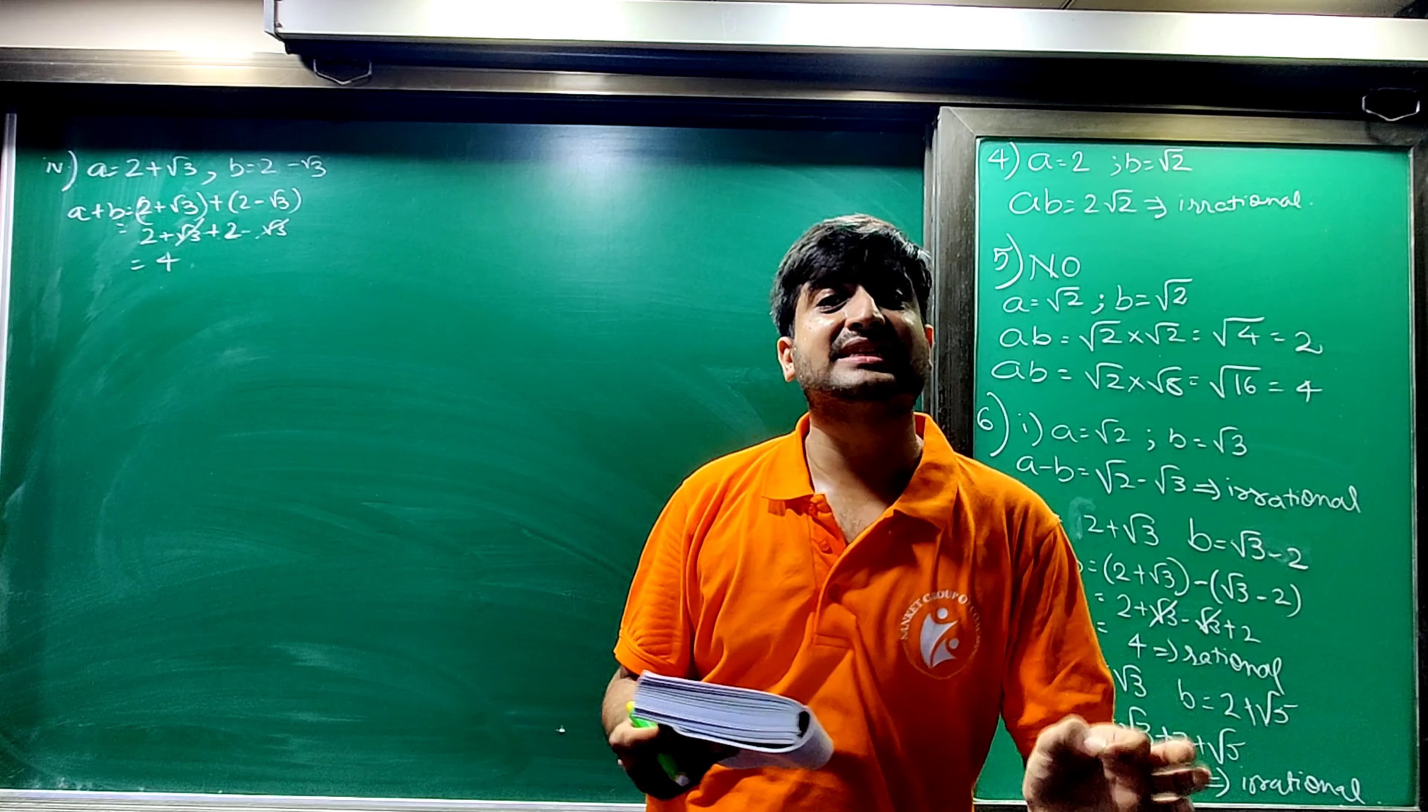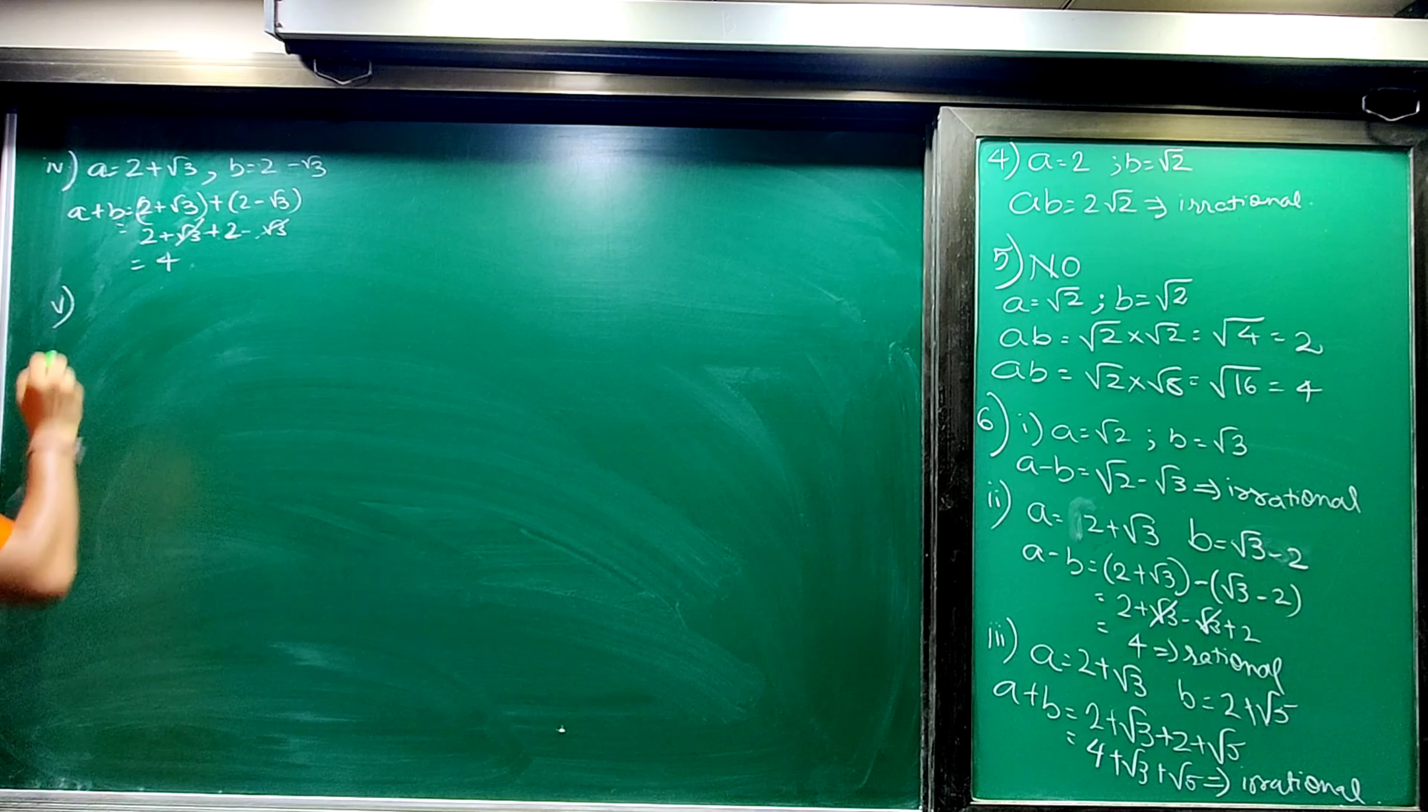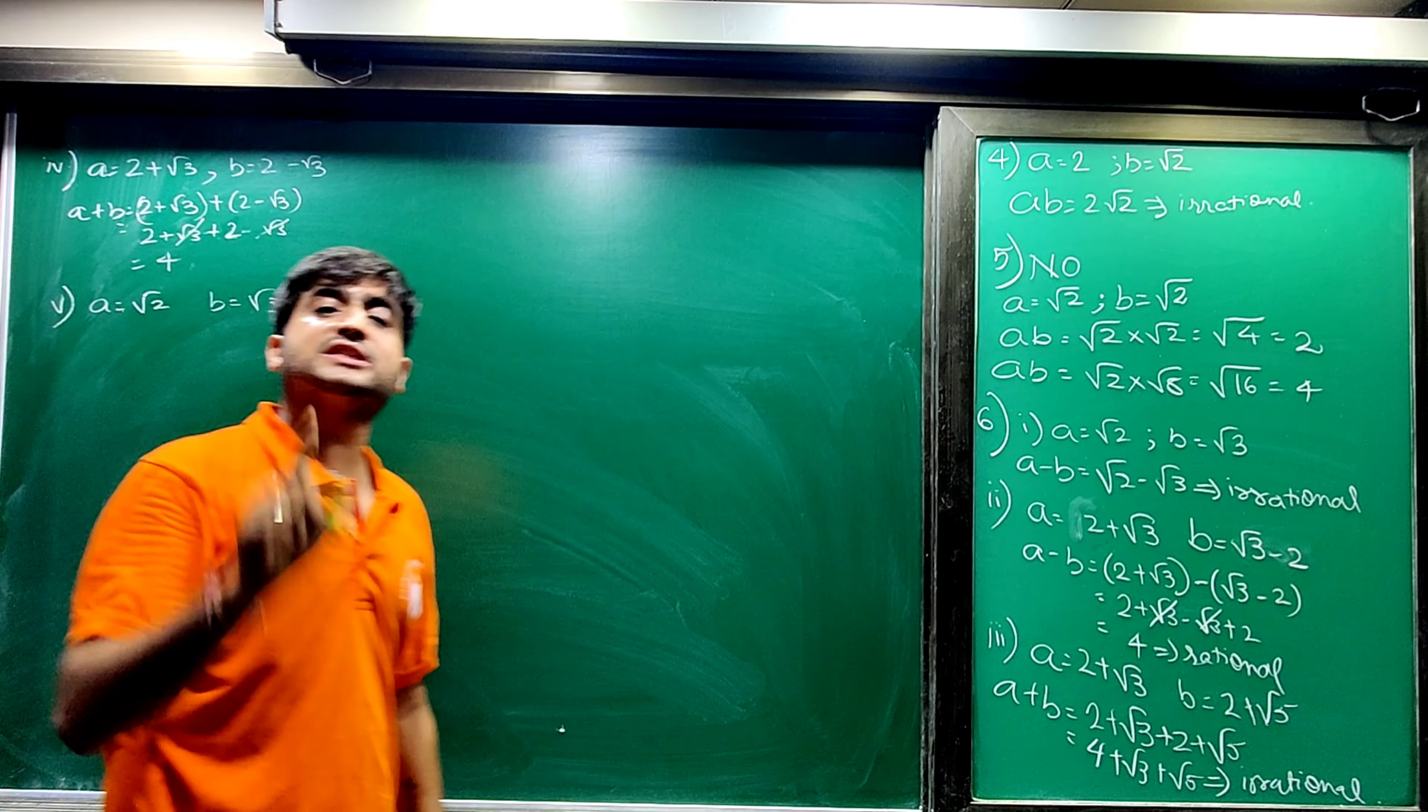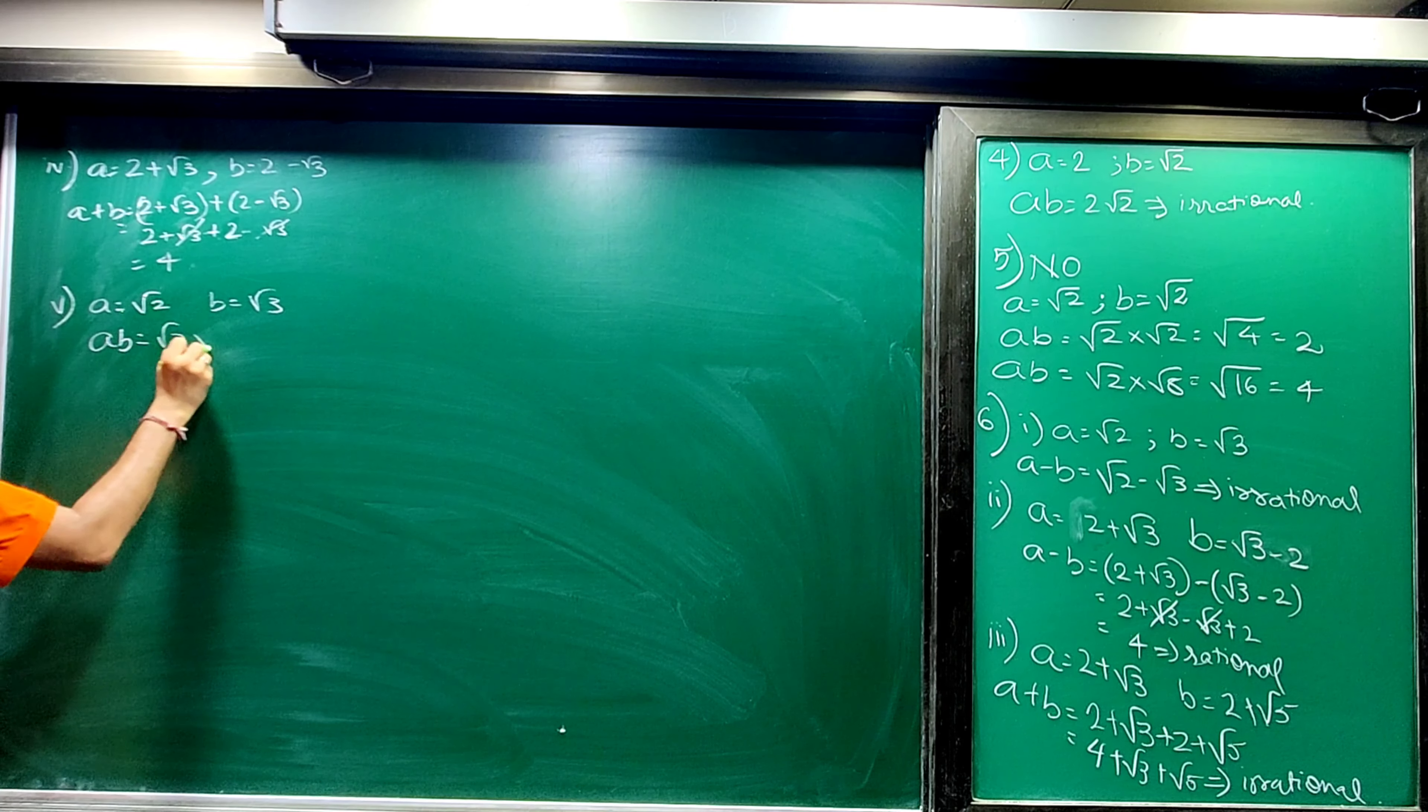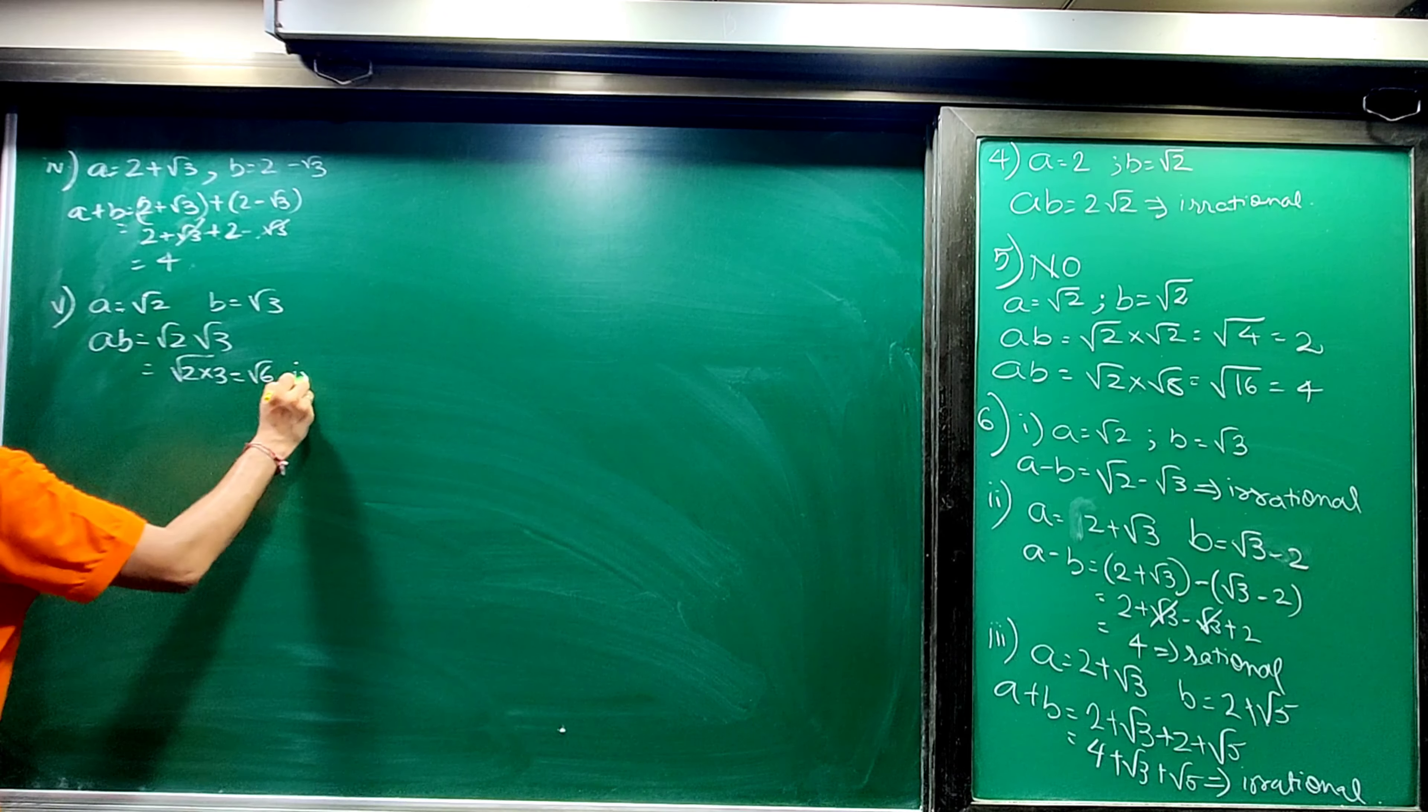Fifth: product is an irrational number. Product should be irrational. So a I will take root 2 and b I will take root 3. These two are irrational numbers. Product of this should be irrational. So a into b, root 2 into root 3, will be root 6, which is again irrational number.